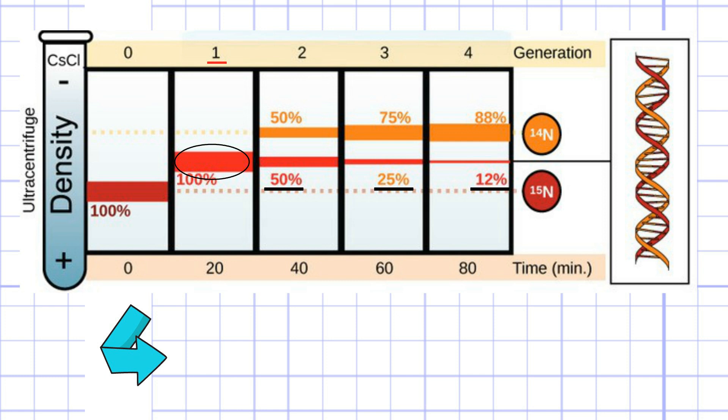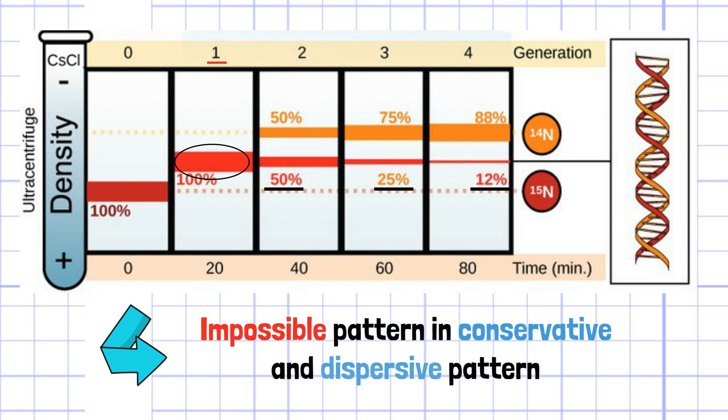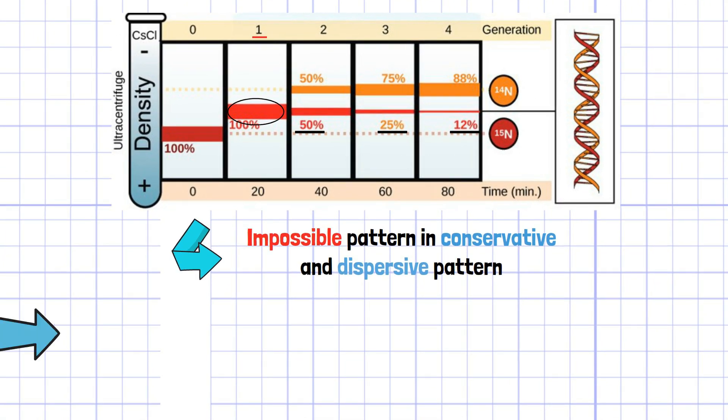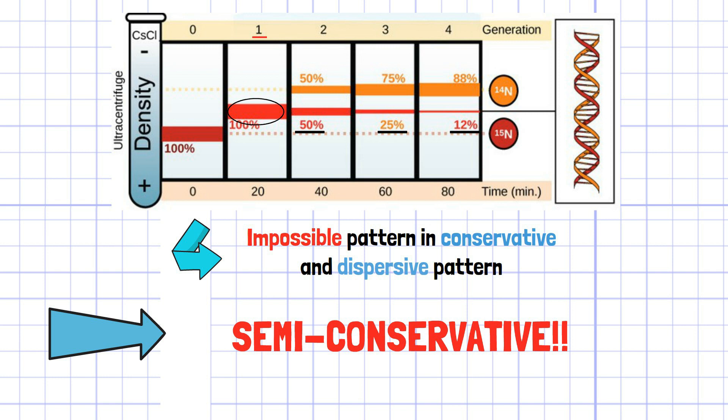In case of dispersive replication, it is impossible to observe patterns of bands like conservative or semi-conservative. As a result of the experiment, semi-conservative pattern was observed so Meselson and Stahl succeeded to prove the validity of semi-conservative replication of DNA.